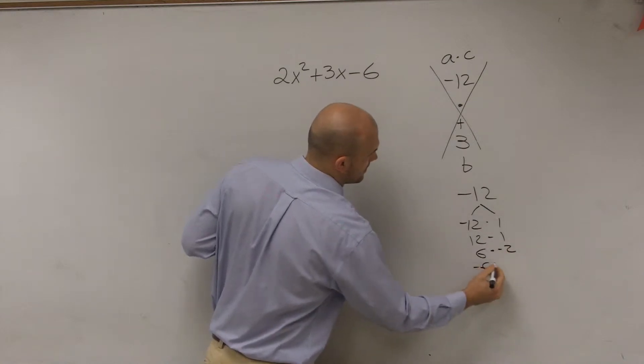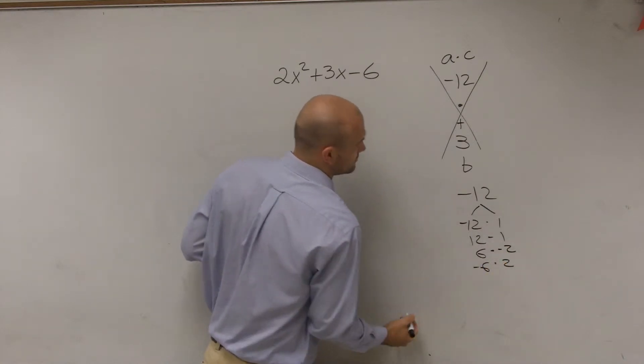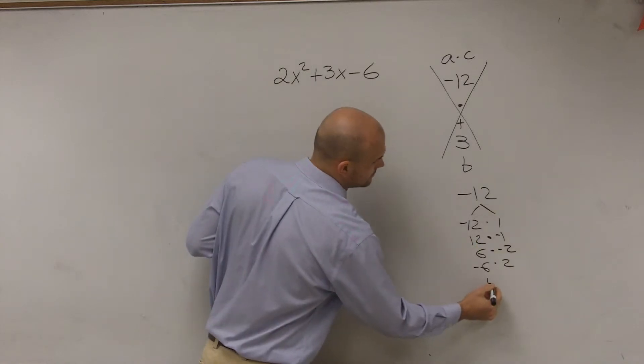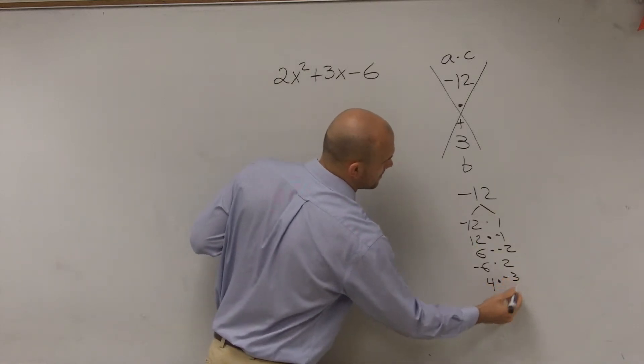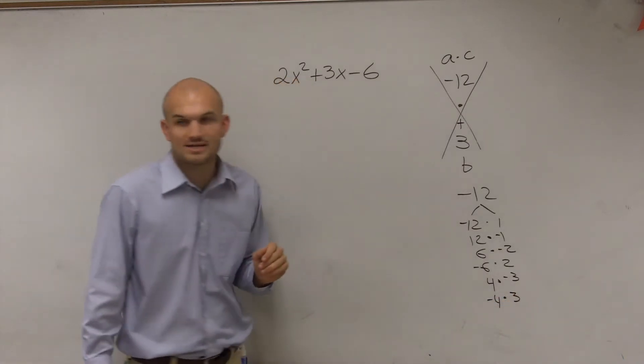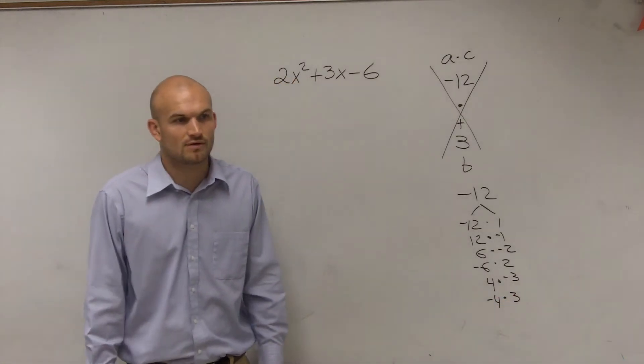But if you do 12 minus 1, it's prime. What did you get? All the possible combinations that multiply to give you negative 12 add up to 3.